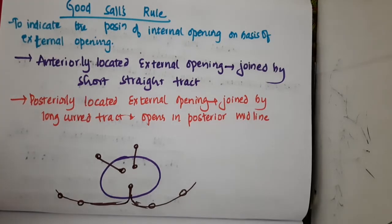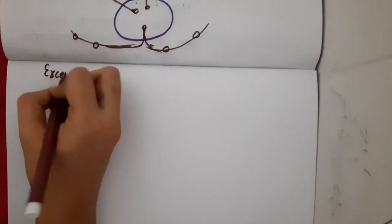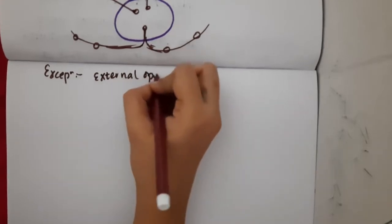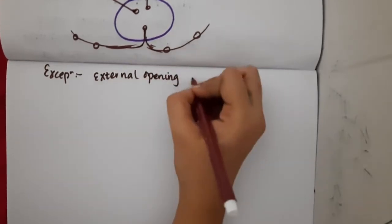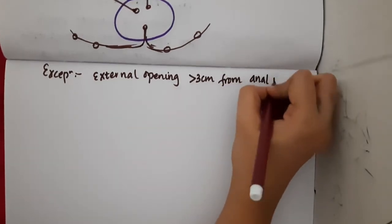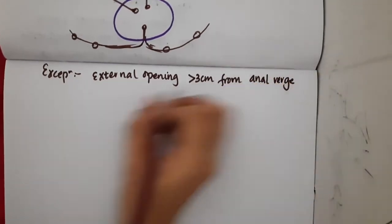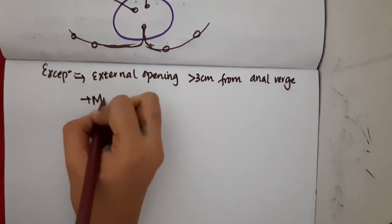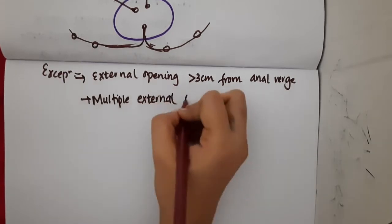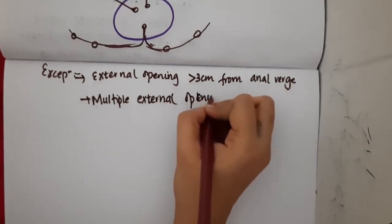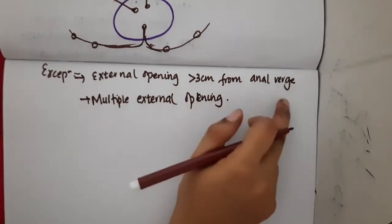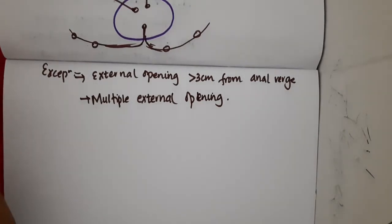The exception to Goodsall's rule is: if the external opening is more than 3 cm from the anal verge, or if there are multiple external openings.